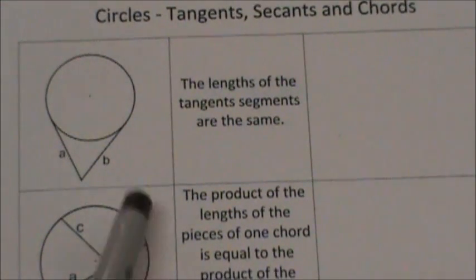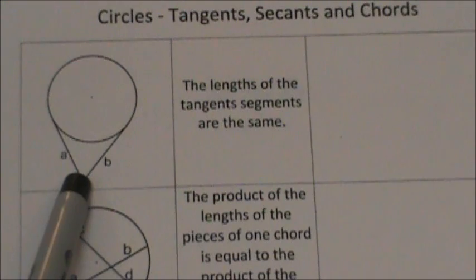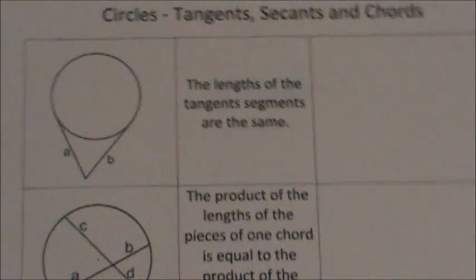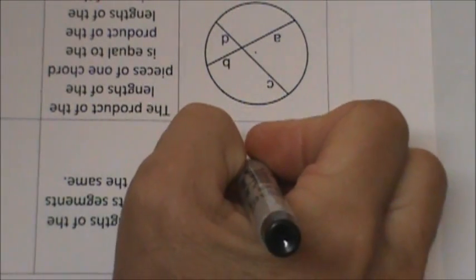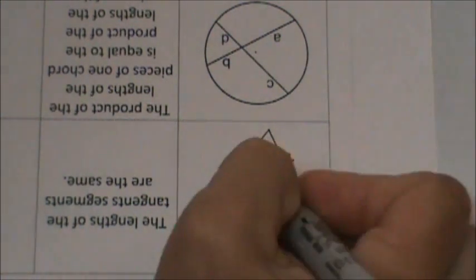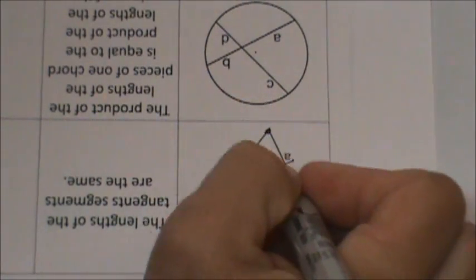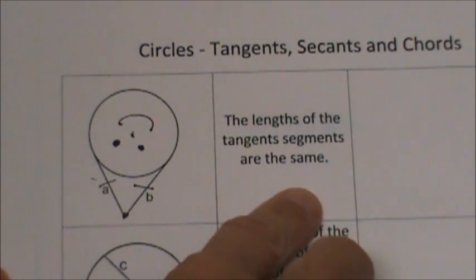We're going to start with just two tangents. We have a circle and an exterior point, and two tangents drawn to the circle. This follows the party hat rule: if you have an exterior point and two tangents drawn, those two segments are congruent. The lengths of the tangent segments are the same.